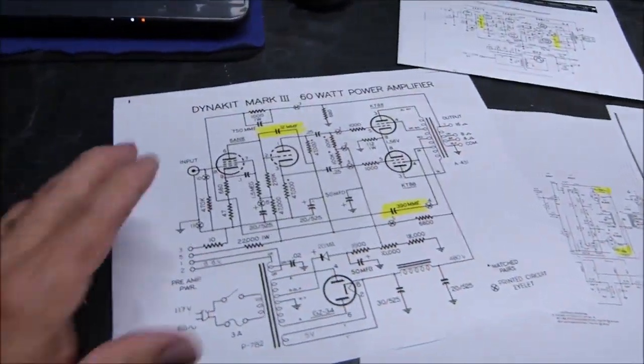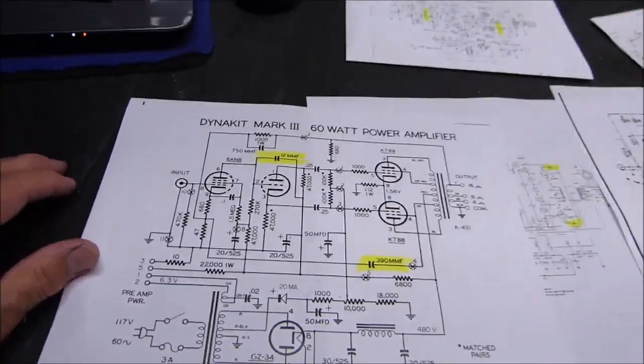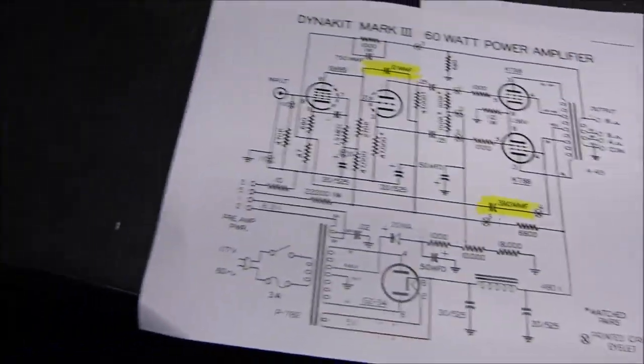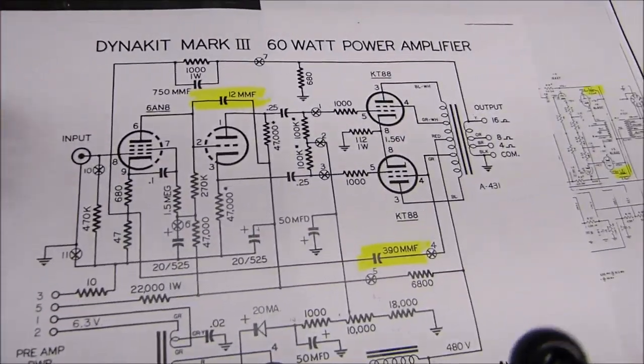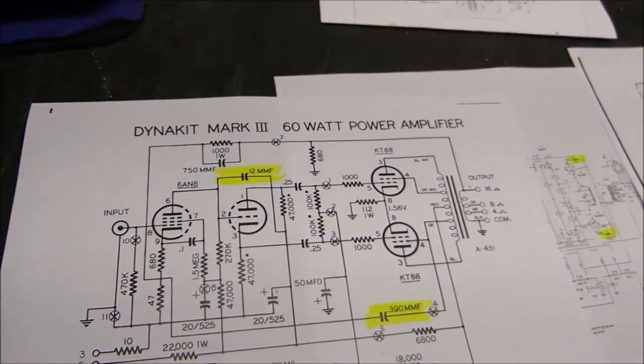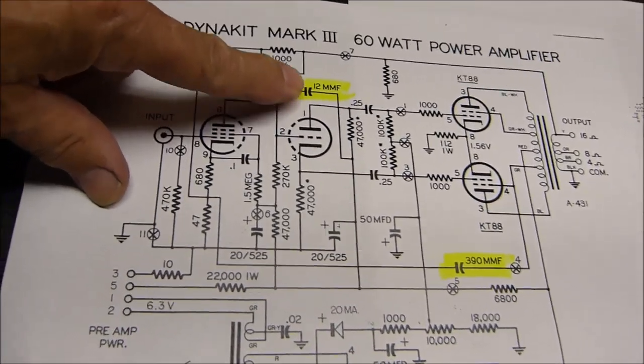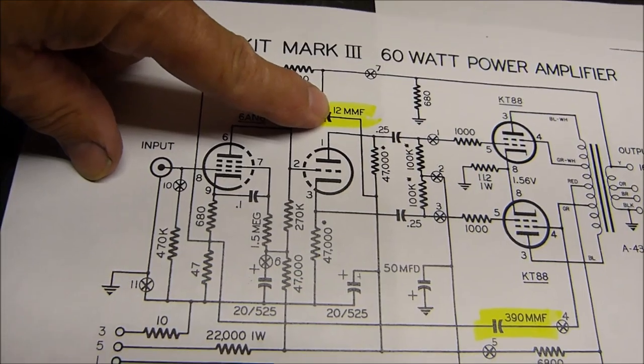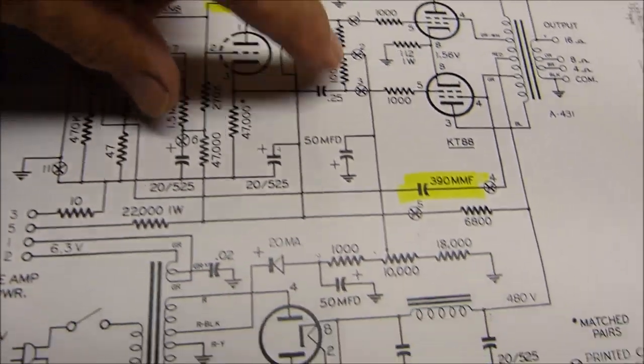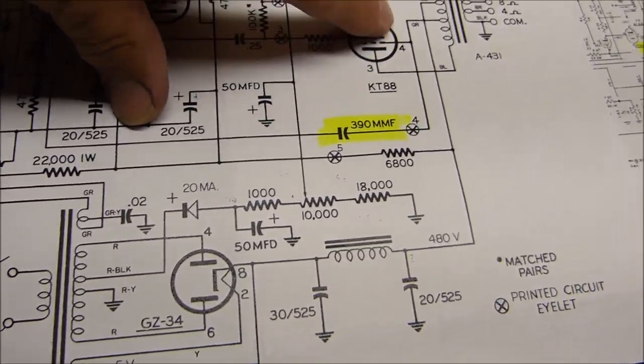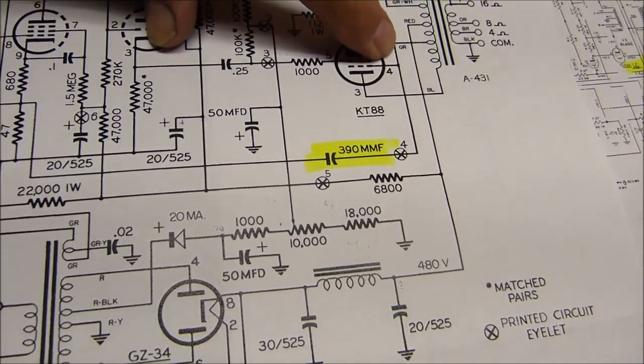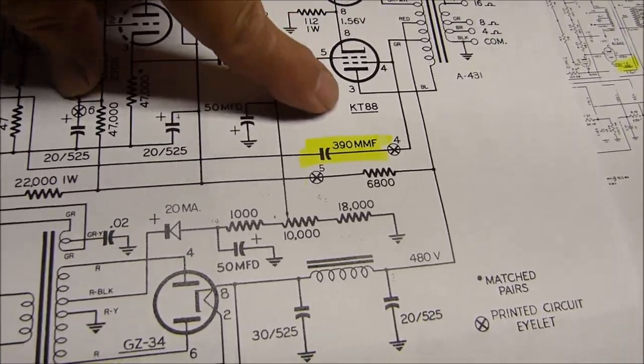I'll start showing you some schematics. This is a little bit later era, the Dynakit Mark III, but I just want to point out some things. Look at this 12 picofarad and this 390 picofarad coming off the screen of one of the output tubes, one of the KT88s.